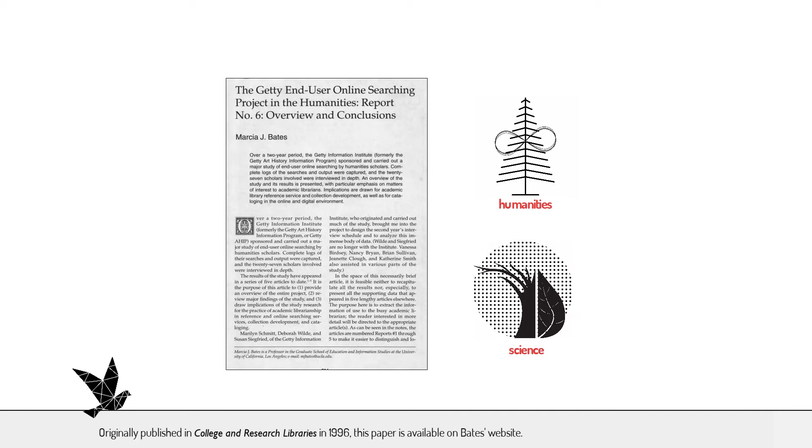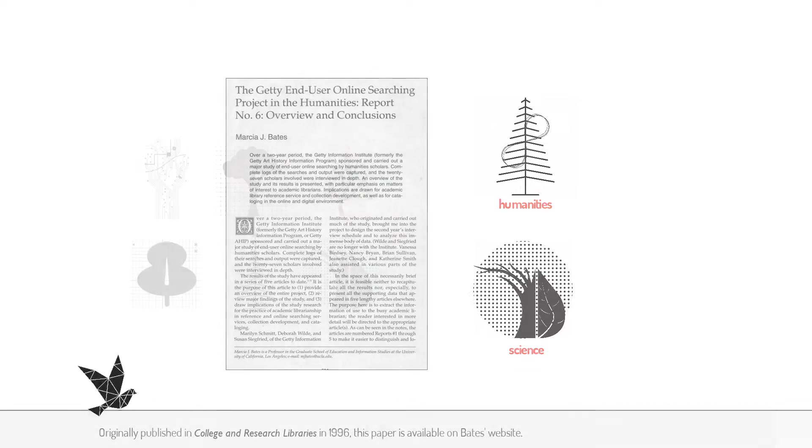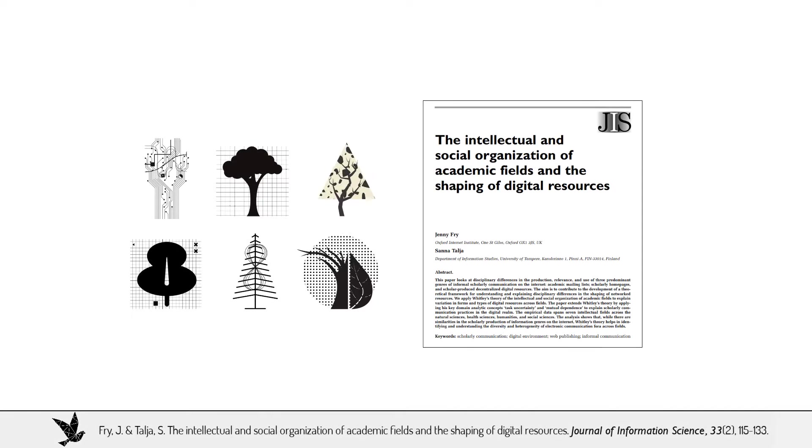Differently, I feel there are some brilliant examples in the literature, and highly recommend papers that make comparisons across domains. Marcia Bates' studies in the 1990s of humanists working at the Getty Research Institute reveals the fundamental differences between information practices in the humanities and those in the sciences. Or Jenny Fry and Sanatalia's 2007 paper that explains variations in the use of digital resources across several different fields. Both papers are theoretically and methodologically sophisticated and vividly illustrate how disciplines operate as distinct information environments.